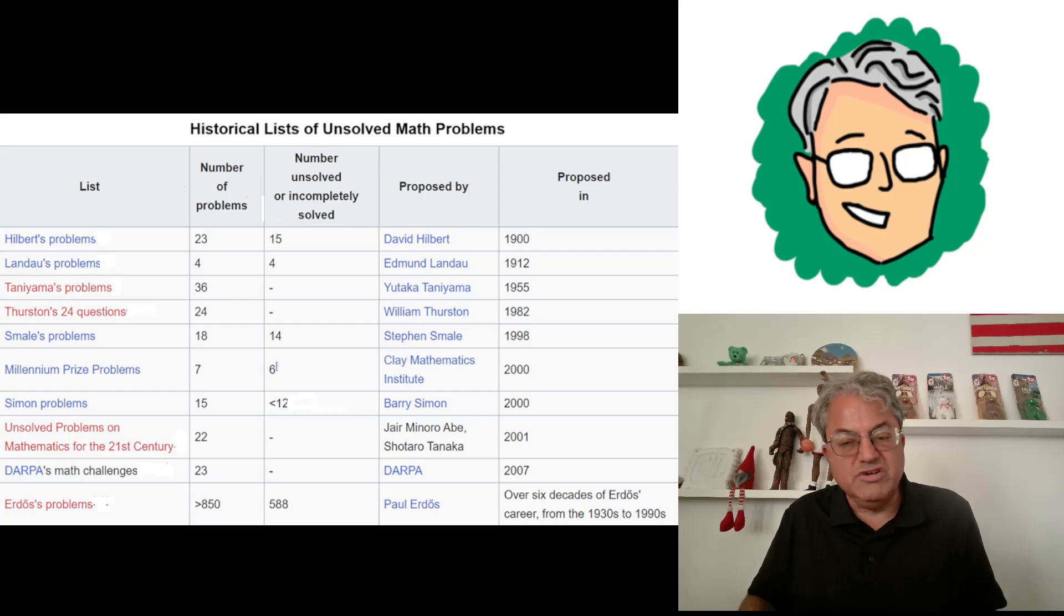Probably the most famous example of this list is the Millennium Prize problems. I'll get to this in a minute, but there were seven of these problems, and one of them was solved by Perlman, I think, in 2002. There's six that are still unsolved. And there was Simon's Problems, 15 of those in 2000. Now there's less than 12 remaining that are still unsolved.